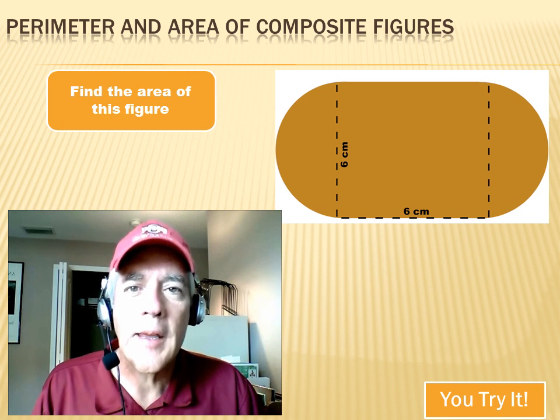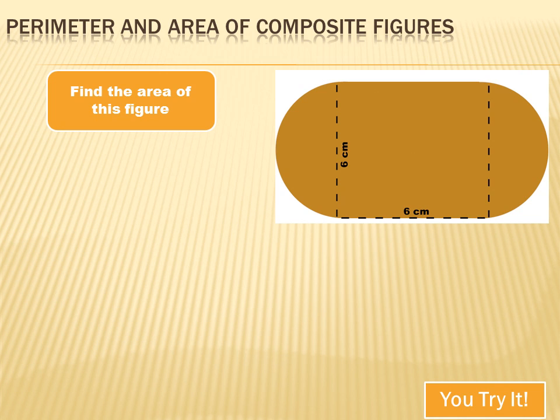Try this one. Hit the pause button, do the problem, and then hit your forward key. Well, if we need to figure out the area of this figure, we need to figure out what the composite figures that make up this figure are. So, let's look at it. I see a square that's six centimeters by six centimeters. And then I see a semicircle over here that has a diameter of six centimeters. And I've got an identical semicircle over here, which would also have a diameter of six centimeters. So, I've got two semicircles, which is equal to one circle, plus I've got one square.